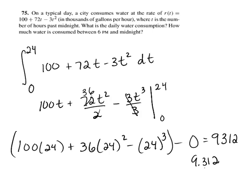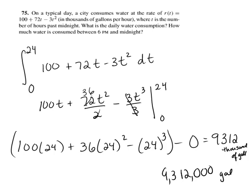Oh, I don't understand... let's see. Okay, so this is thousands of gallons per hour, and so this is going to be thousands of gallons. This is kind of tricky, isn't it? So thousands of gallons, that's 9,312,000, so that's 9,312,000 gallons would be the correct answer there, because it's in thousands of gallons per hour.